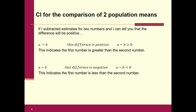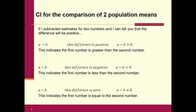And if you do the difference between the two numbers and the difference happens to be zero, that tells you that they're equal to one another. If you have this simple understanding, interpreting the confidence interval is so much easier.